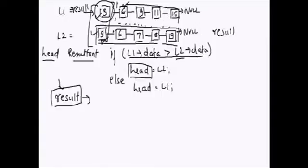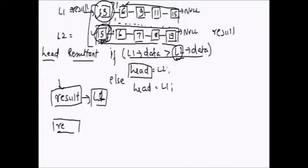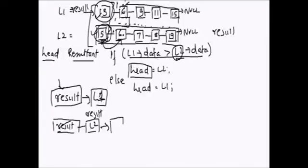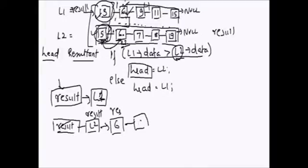If L1's data is greater than L2's data, then result's next will be the L2 node; otherwise result's next will be the L1 node. After adding the selected node, the corresponding pointer is advanced to the next node in that list. For example, if L2's node is added, L2 is incremented to point to the next node in L2.